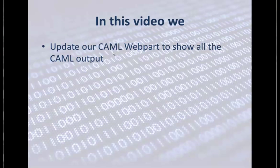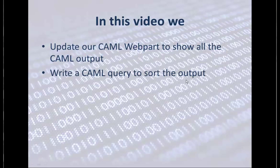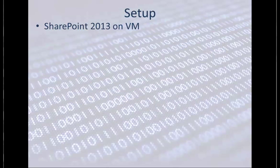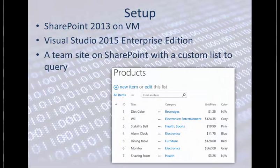First, I start by updating the CAML web part that I developed in the previous videos. If you haven't watched it, I will put the link in the video description. We want to update that web part so that it shows all the rows and columns that the CAML query returns. Then we want to write a CAML query to sort the output, limit the rows it returns, and define a view with a limited number of fields. I'm using SharePoint 2013 on a Virtual Machine in Visual Studio 2015 Enterprise Edition, and on the SharePoint site I have already created a list called Products with a couple of rows and columns.